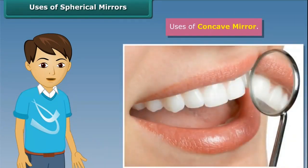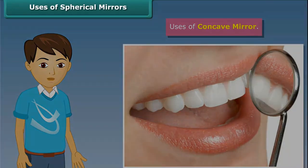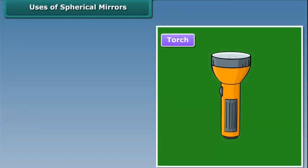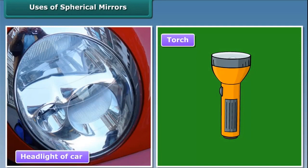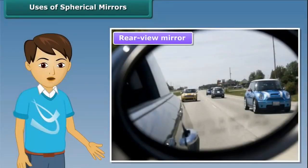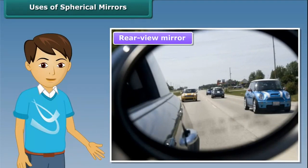Concave mirrors are used by dentists to obtain a magnified image of the teeth. They are also used as reflectors of torches and headlights of cars and scooters. Similarly, convex mirrors are used as rear-view mirrors in cars and on motorcycles to help the drivers to see the traffic behind them.